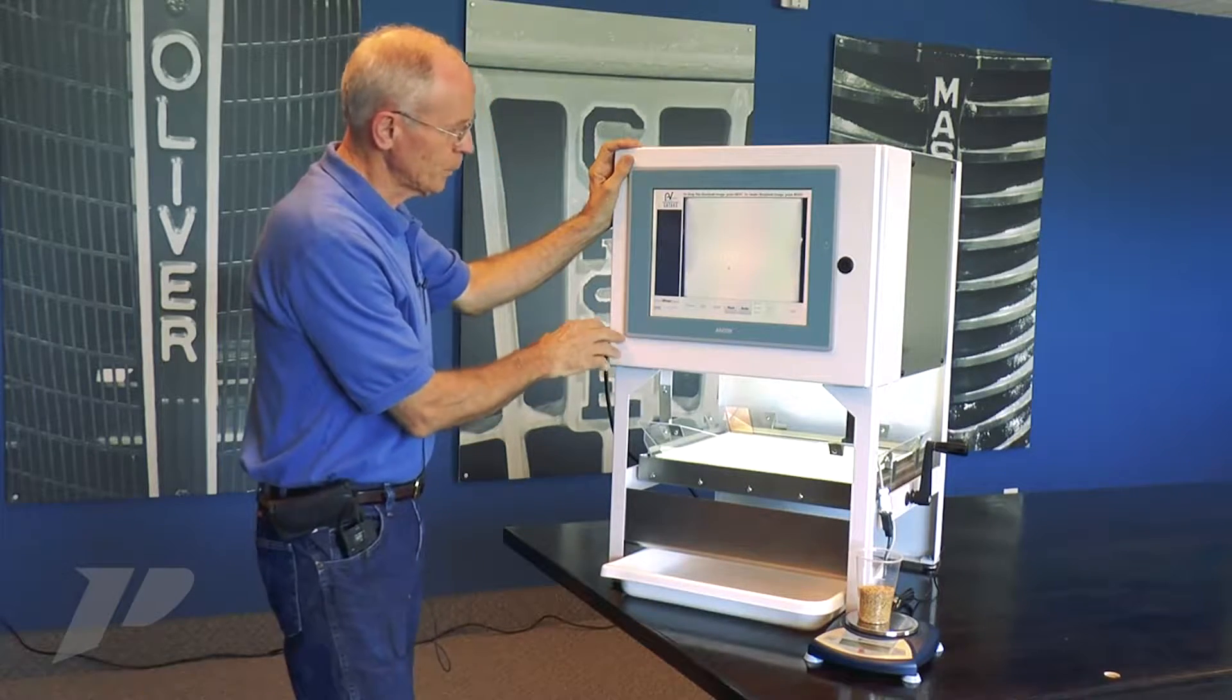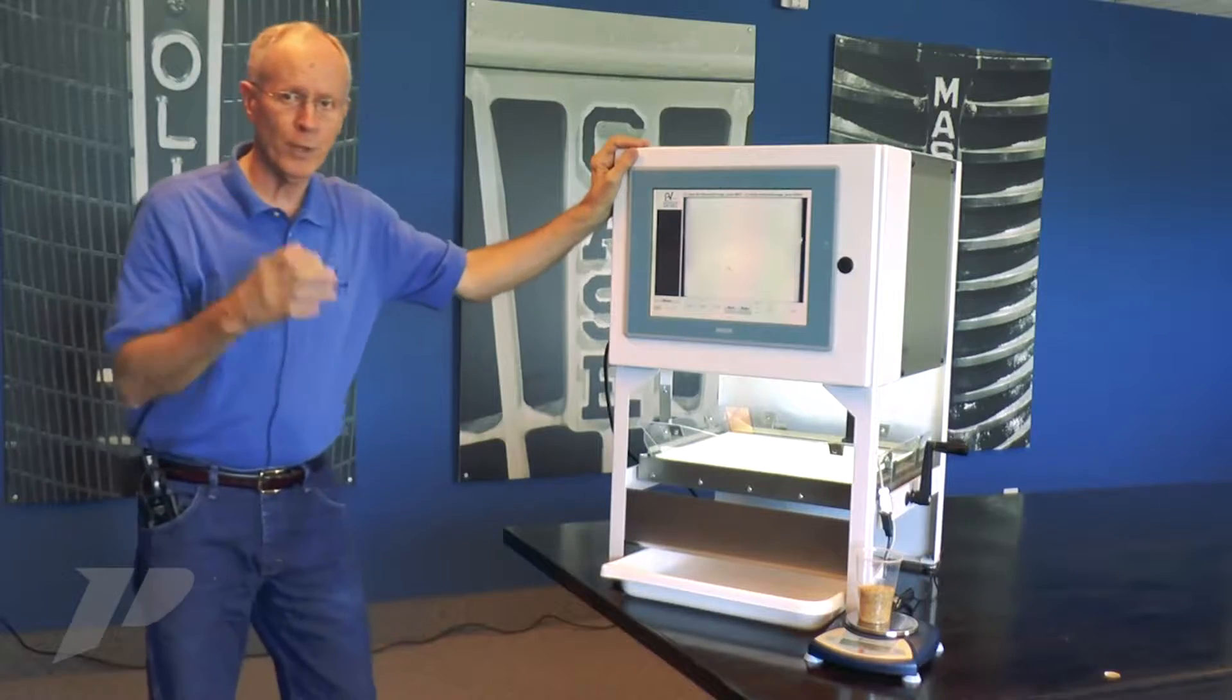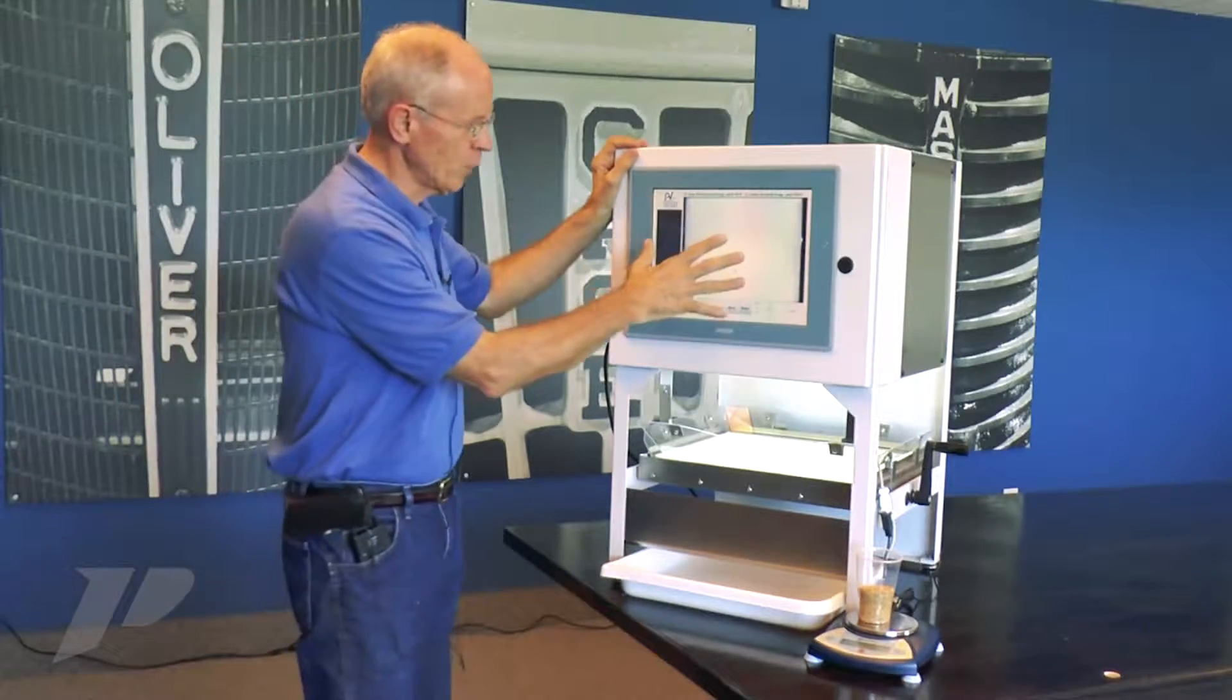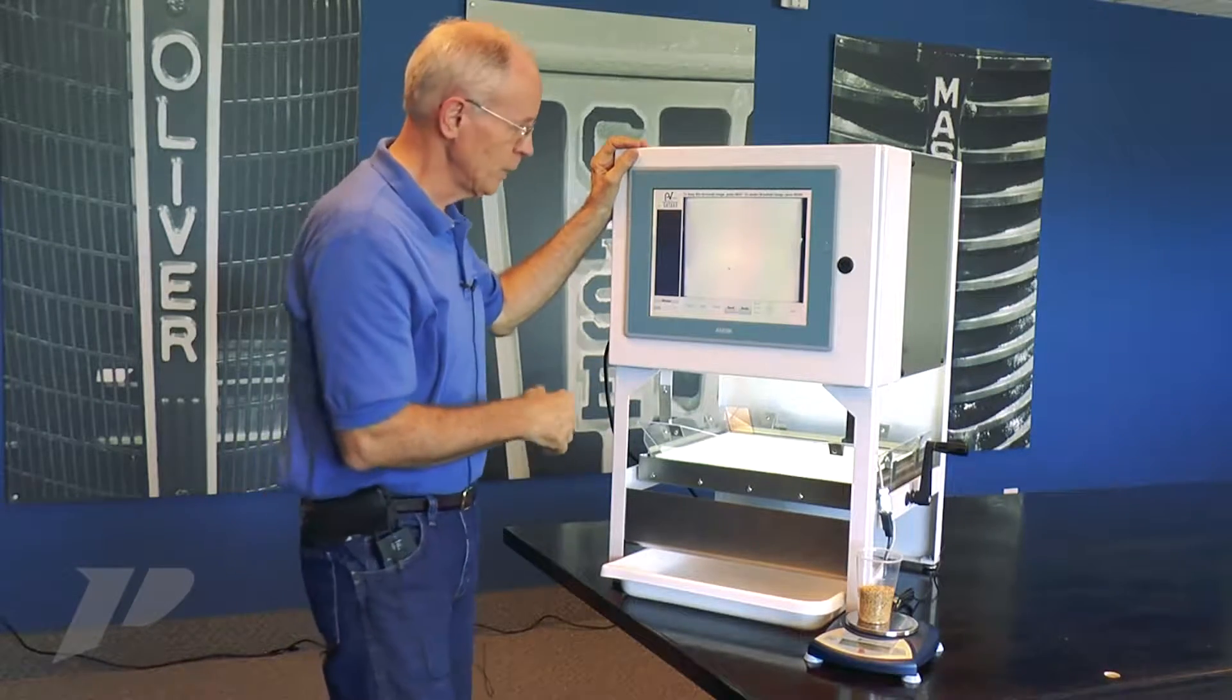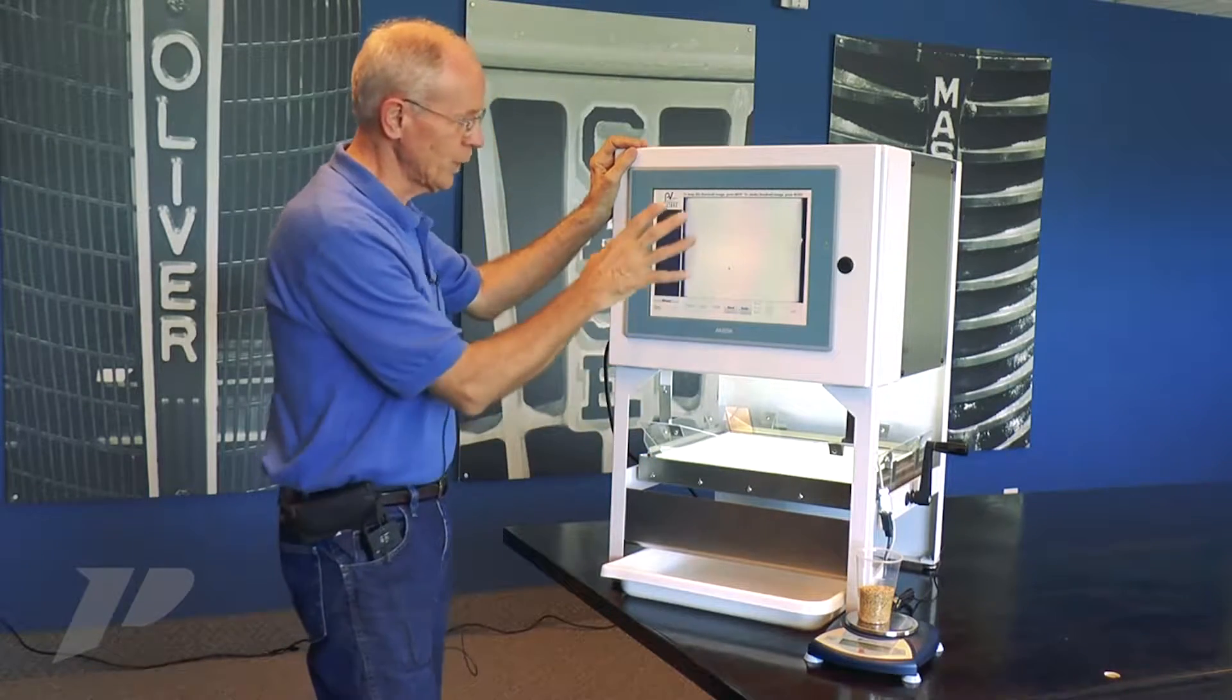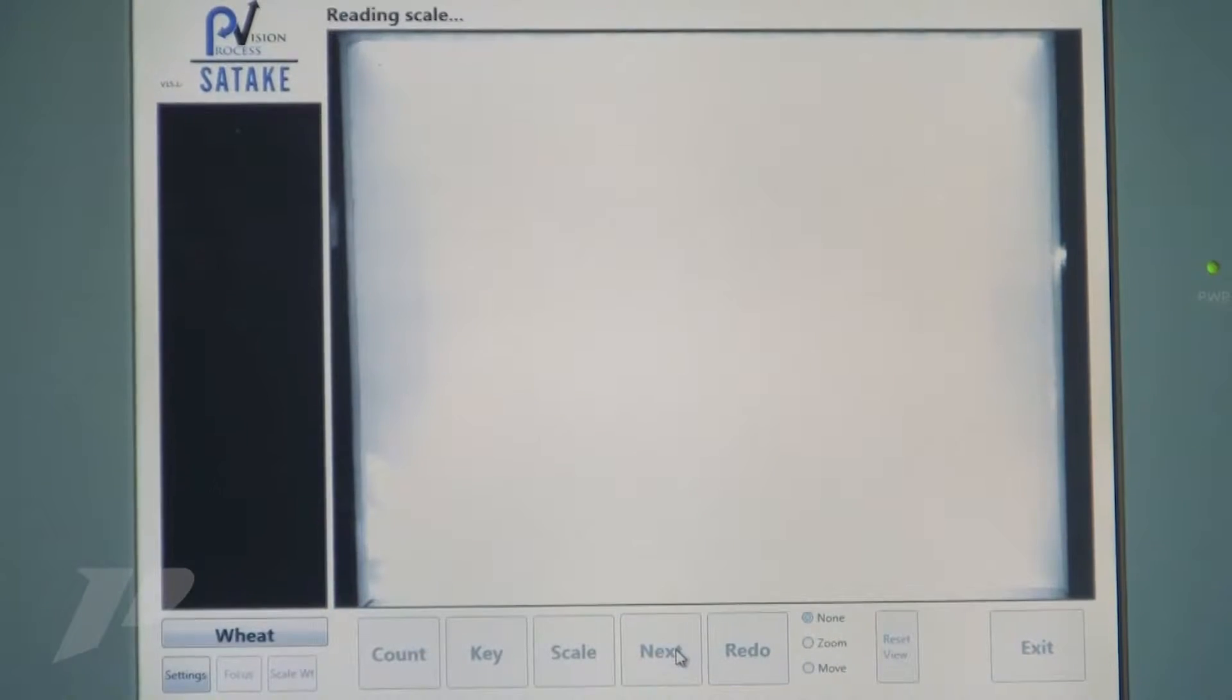We're getting a threshold image. We have a good clean threshold image. In vision, what we want to do is compare nothing to something. Nothing is what we have without the product. Something is what we take the picture with the product. We're going to look at the difference between those two, so we need to have a good background image for that. That's what we have here. I'll click next to accept that background image.